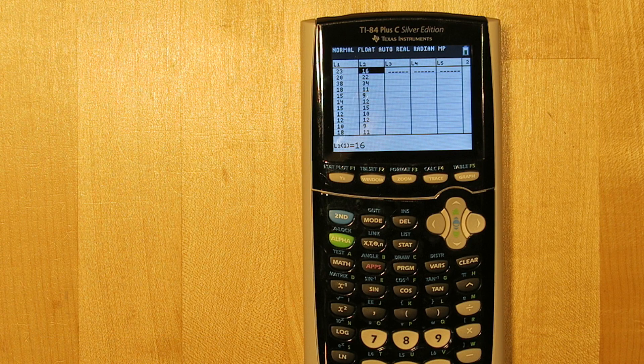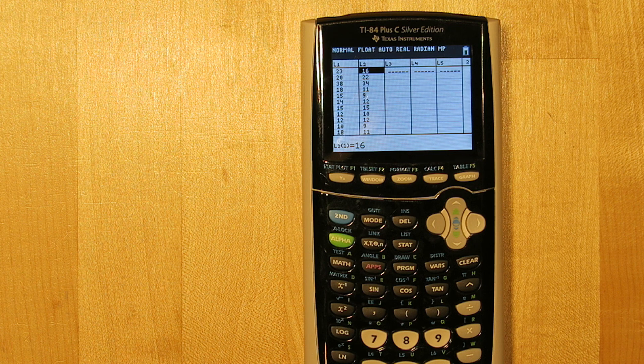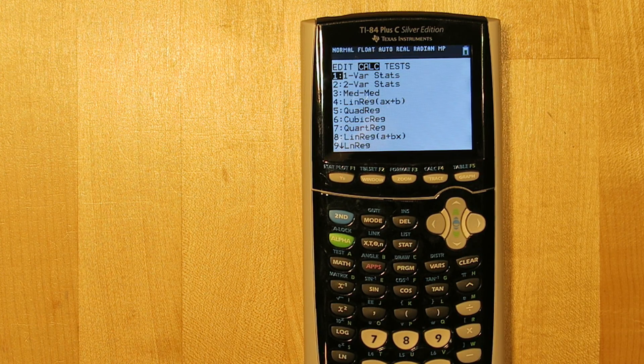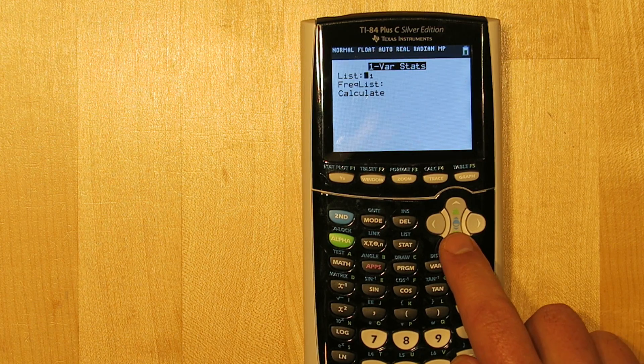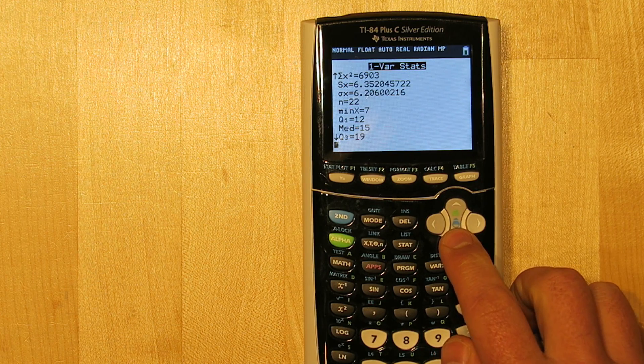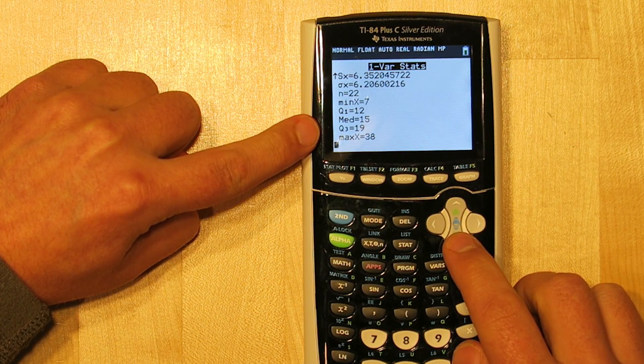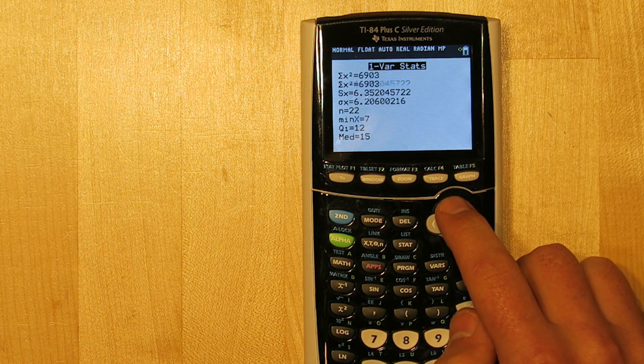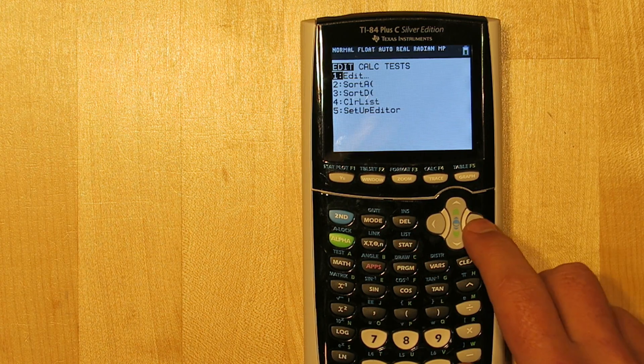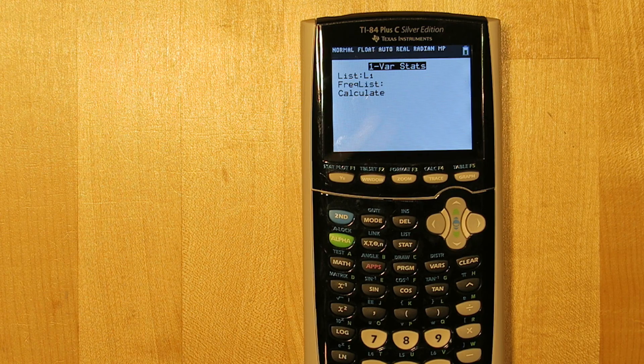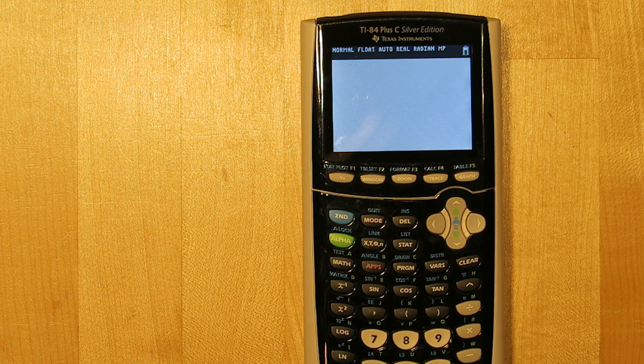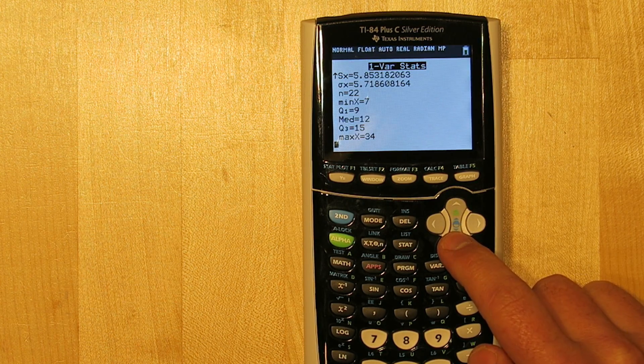Before we go, let me show you one more way to find the five number summary from your calculator. After inputting the data into the list, you can press STAT, go over to CALCULATE, and one VAR STATS. Right now, list 1 is set as the default, so we'll go down to CALCULATE and press ENTER. If we push down, here's the five number summary. The minimum, quartile 1, median, quartile 3, and the maximum. You also have other useful information, like the mean right at the top. You can do the same thing for Pirate Plunge by pressing STAT, go to CALCULATE, one VAR STATS, but change this to LIST 2 by pressing 2nd, and then the number 2. There's your data for Pirate Plunge.